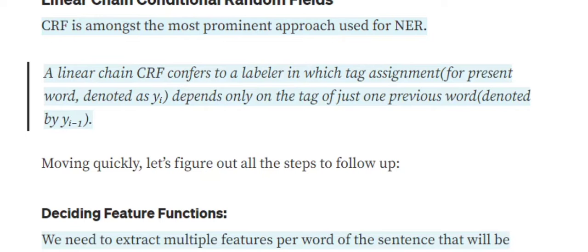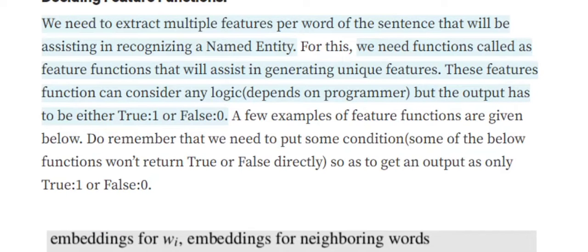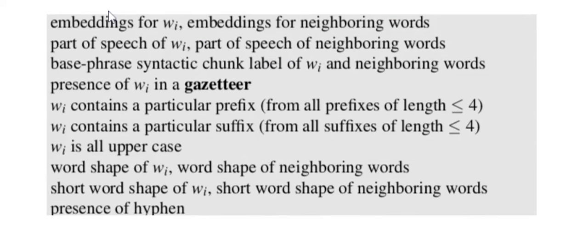The first step in a CRF is deciding on the feature functions. A feature function is built over word-level features to generate word-level characteristics. For example, feature functions can include: is the first letter capital, how many vowels are present, is the word present in some gazetteer, the word embedding, presence of a hyphen, etc. These small functions take a word and give an output that helps us build features over words.